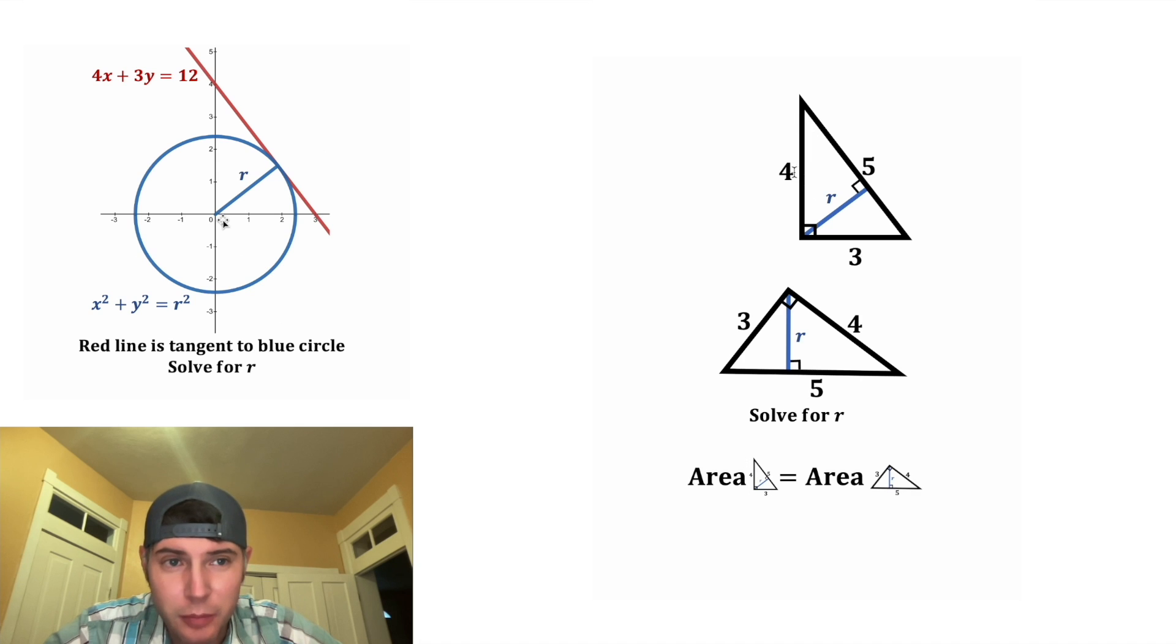So the area of the top one should be equal to the area of the bottom one. Well, for the top one, the area is 1 half times the base of 3 times the height of 4. And for the bottom one, the area is 1 half times the base of 5 times the height of R. And now we can simplify this.